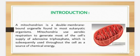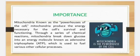ATP is subsequently used throughout the cell as a source of chemical energy. Mitochondria, known as the powerhouse of the cell, produce the energy necessary for the cell's survival and functioning through a series of chemical reactions. Mitochondria break down fuel into an energy molecule known as adenosine triphosphate (ATP), which is used to fuel various other cellular processes.